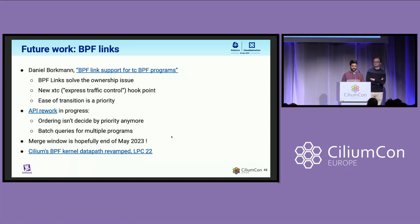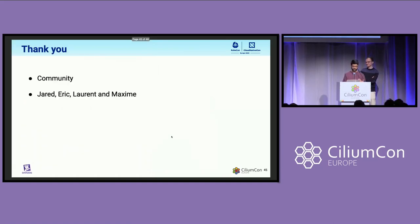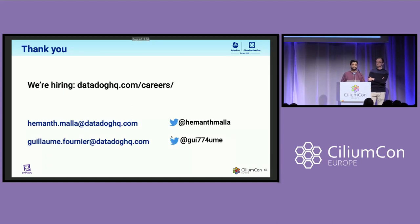There's also a great talk by Daniel Borkmann that gets into a lot more detail about BPF links and traffic control BPF links and how we could use them — do check that out. In conclusion, this was actually not a murder. It was just an accident because there were no clear guidelines established on how different people should use TC eBPF together. This was a complex incident that took us several weeks to get to the bottom of, and we're really thankful to the community for all the help. We'd also like to thank team members Jared, Eric, Laurent, and Maxime. If you're interested in working on weird and fun networking issues like this, we're always hiring — reach out to either of us on email or Twitter. Thank you.